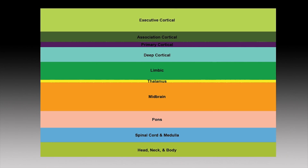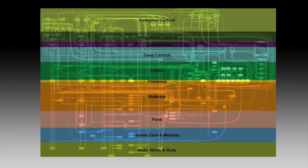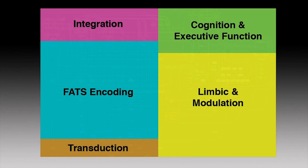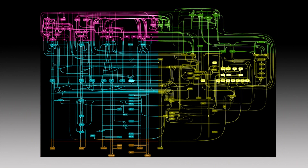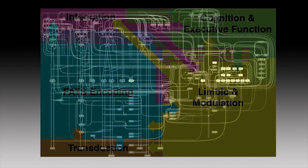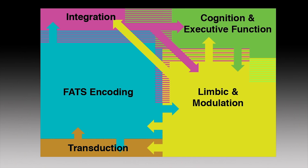Brain regions are also organized by axial hierarchy such that the head, neck, and body are near the bottom of the map, and higher level executive cortex is at the top. Finally, the map is organized by five dynamical systems, including transduction, FATS encoding — which is the encoding of information related to frequency, amplitude, time, and space — association and integration functions, executive functions, and modulatory functions, including chemical and visceral modulation. This map represents a basis for connectivity and modulation between different functional brain networks. Further, this model of brain processing may be clinically useful for the differential diagnosis and treatment of disorders that affect different sensory systems, including the auditory system.